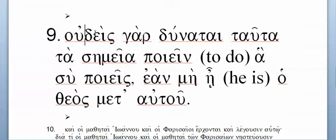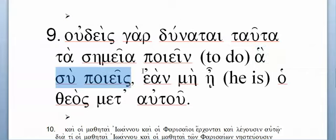Which means this phrase has to be in the accusative and has to be the direct object. So: 'for no one is able to do these signs.' And here's your 'to do.' Then your relative pronoun 'which.' Hopefully you recognize this from your contract verb discussion — when you have poie-o, as soon as you say poie-o, you know it's a contract verb.